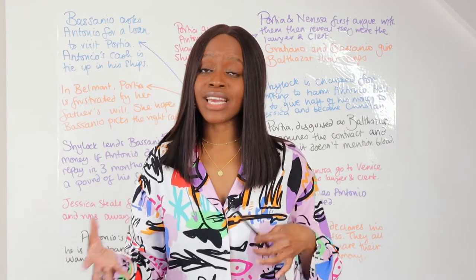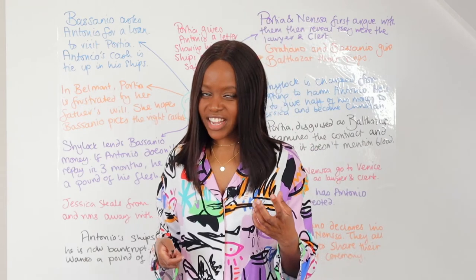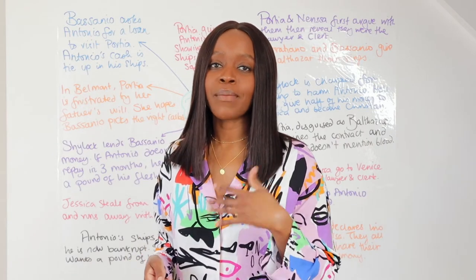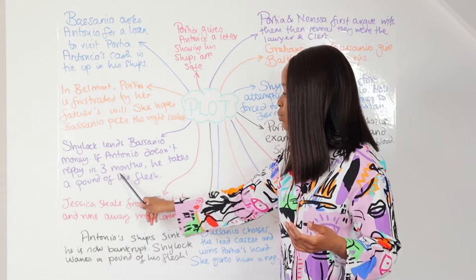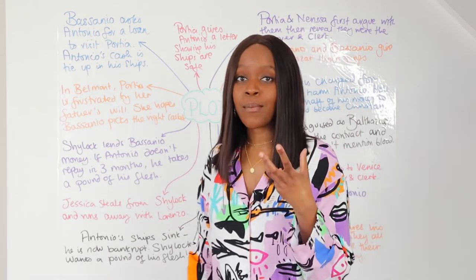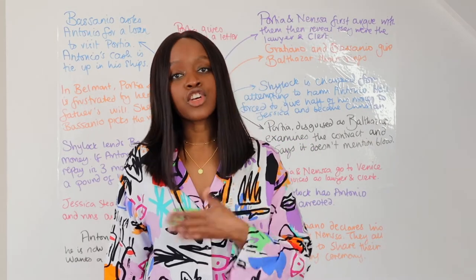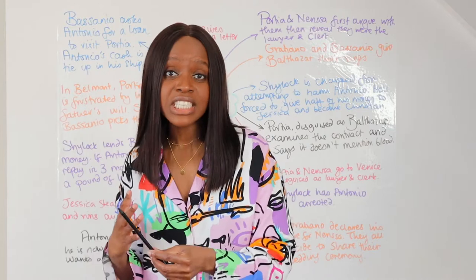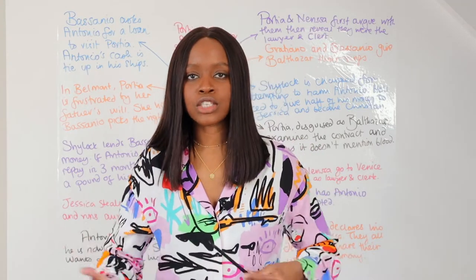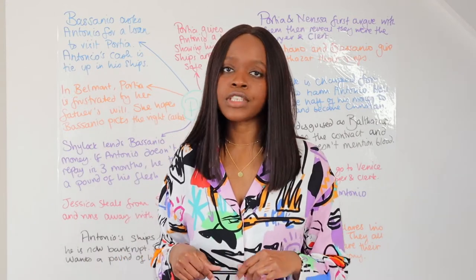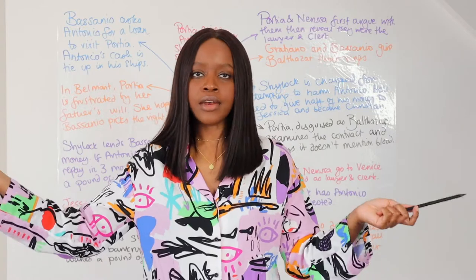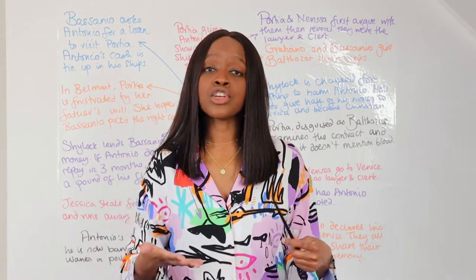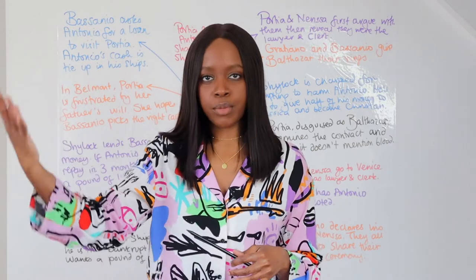Shylock agrees to lend Bassanio the money on one condition: if Antonio is unable to pay back the loan in three months, Shylock has the right to take a pound of Antonio's flesh. Antonio is present when these conditions are given. Bassanio is really reluctant — he thinks Shylock can't be trusted and hasn't hidden his dislike for Antonio. However, Antonio is really confident that all his ships will come back in good time and he'll be able to pay back the 3,000 ducats. So Antonio agrees and tells Bassanio not to worry — take the money, go off, and marry Portia.